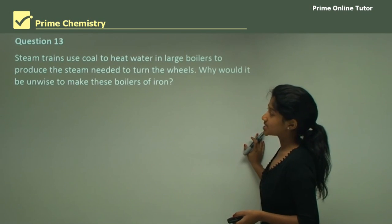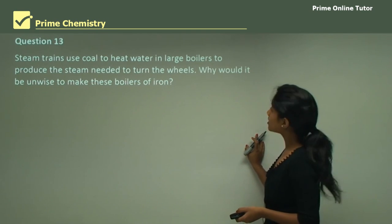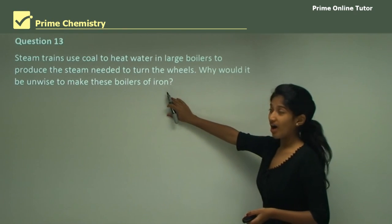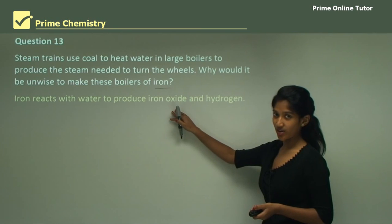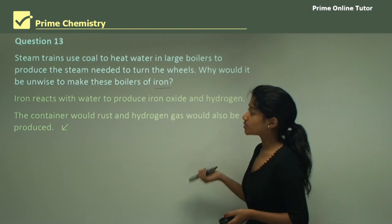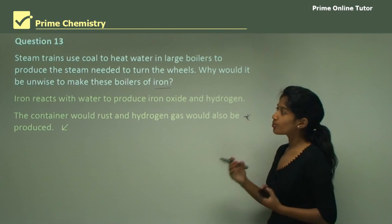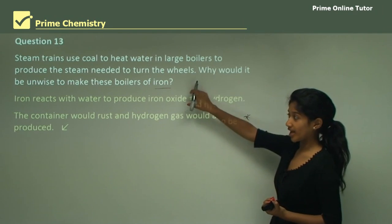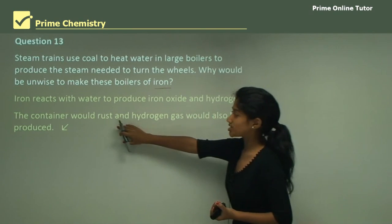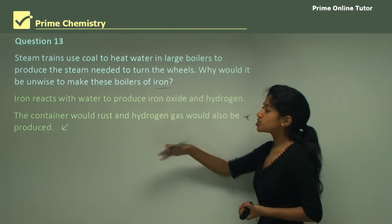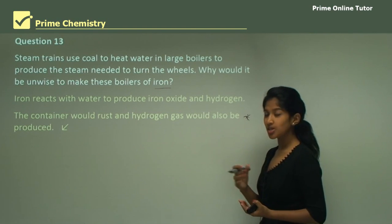Question 13: steam trains use coal to heat water in large boilers to produce steam to turn the wheels. Why would it be unwise to make these boilers of iron? Because iron reacts with water to produce iron oxide and hydrogen gas — the container would rust and hydrogen gas would also be produced. Iron oxide is rust, so the rusting would damage the steam trains. This answer incorporates knowledge from other parts of the lesson.